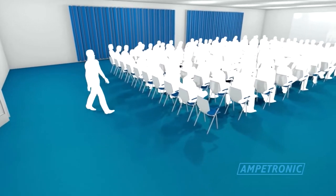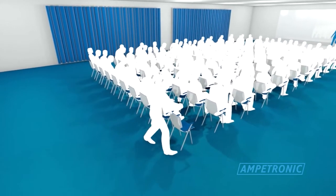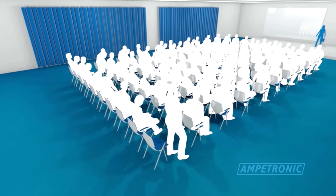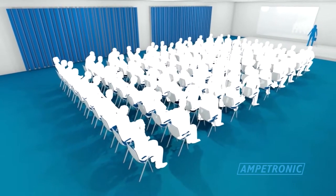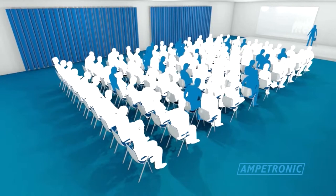A common place to encounter an area coverage loop facility is in a conference room. As many as one in every six people experience some degree of hearing loss, a number that represents a significant proportion of the population.